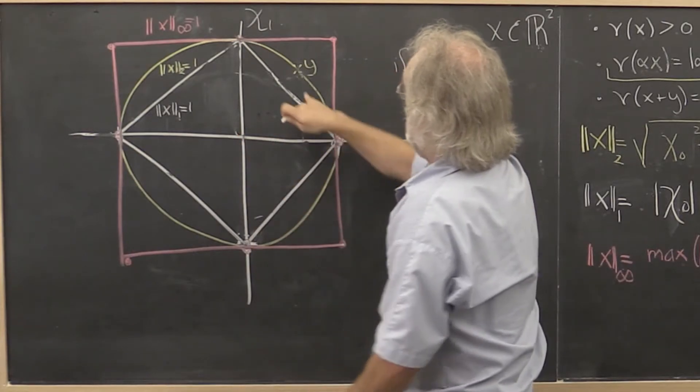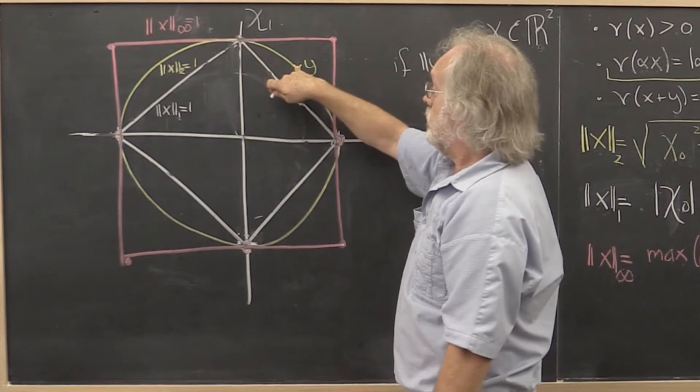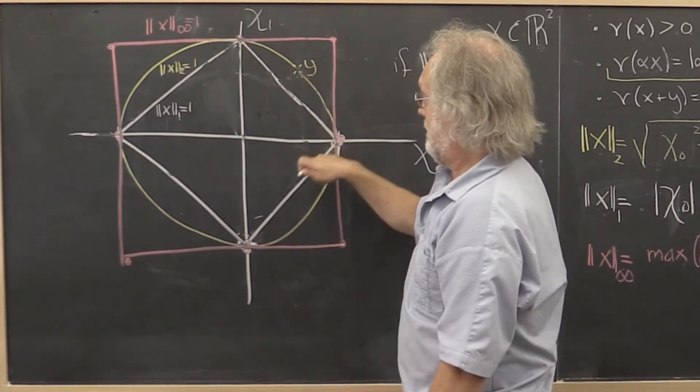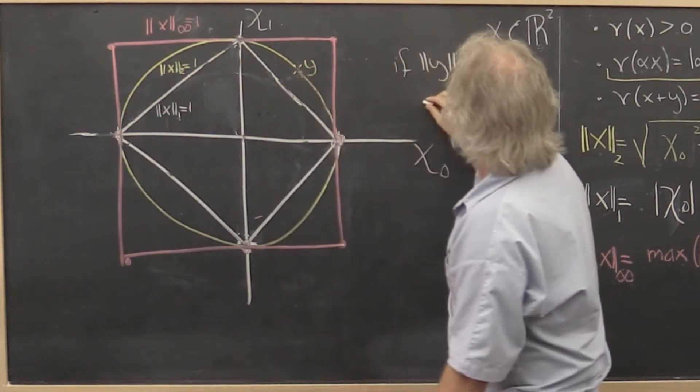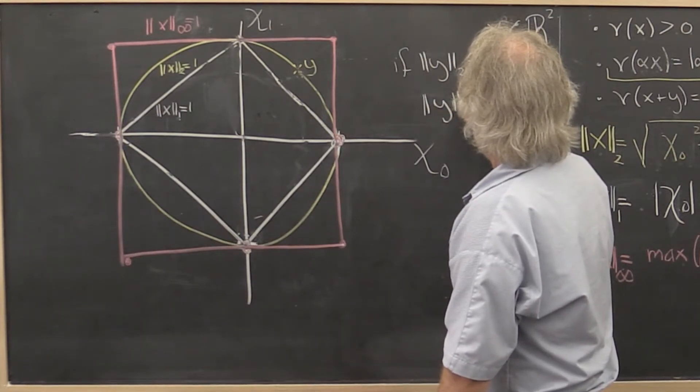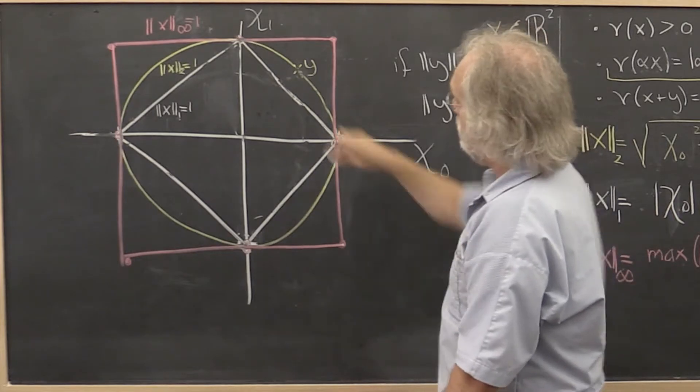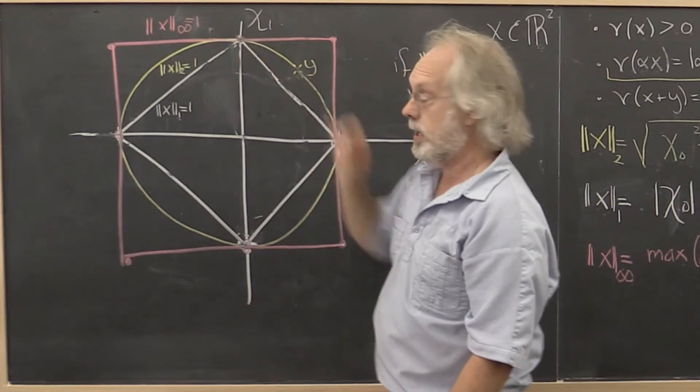So this vector y that we chose on the unit ball for the 2 norm is outside the ball for the 1 norm. And therefore we can conclude that the 1 norm of y is greater than or equal to 1. It could be equal if we had chosen y right there.